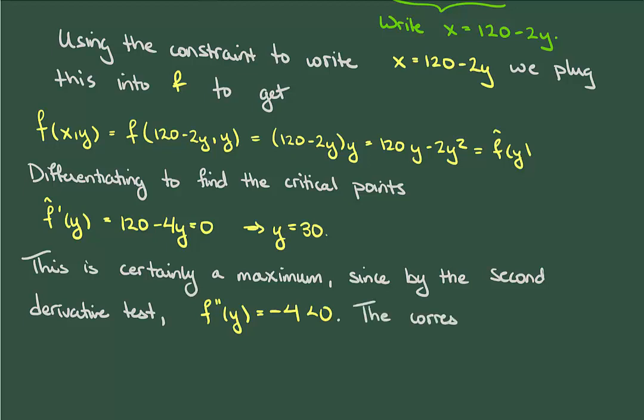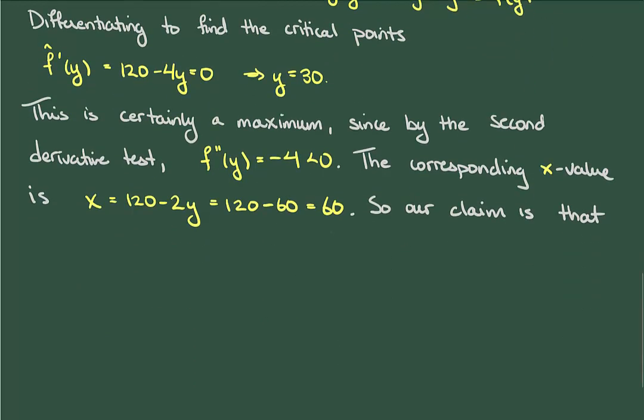Great. So with our y value, let's then find the corresponding x value. To do this, we'll use the equation for x that we found earlier, which gives us x is equal to 60. So our claim is that (x,y) equals (60,30) is the global maximum.